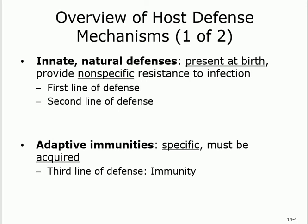Innate means present at birth — we are born with it — and it is non-specific resistance. It will take care of anything. This covers the first and second lines. The specific or acquired immunity is adaptive immunity, where something happens later on to acquire it. This is all about T and B lymphocytes.